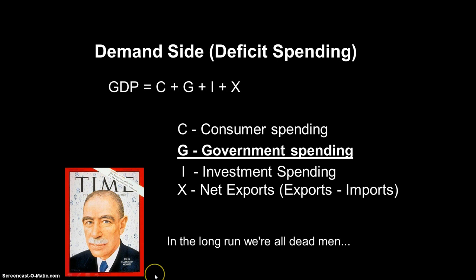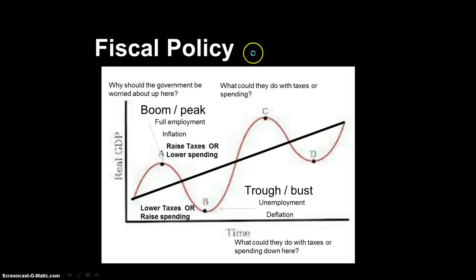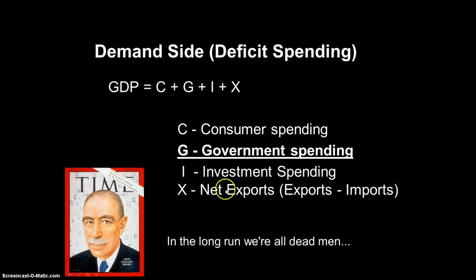Whatever side you agree with is typically based on your political ideology. The idea of raising government spending to pull us out of a recession is known as demand-side economics, and that includes deficit spending — the government spending money it doesn't have with the purpose of raising us out of a recessionary period. The creator of this theory is John Maynard Keynes, pictured here on Time Magazine. His theory was that we should grow government spending to push the economy going again. His quote is that in the long run we're all dead men, so we should first and foremost worry about the short term in creating jobs and getting the economy going.